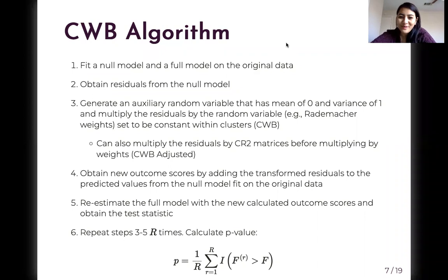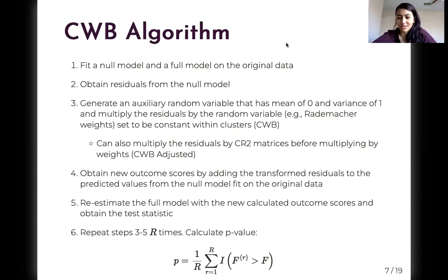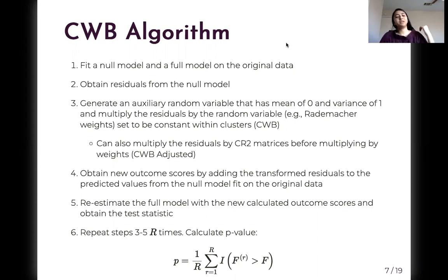This is the algorithm for cluster-wild bootstrapping. First, we fit a null model and a full model on the original data. The full model contains all variables of interest, and the null model excludes the variables being tested. We obtain residuals from the null model, generate an auxiliary random variable, and multiply the residuals by that variable — held constant within clusters. We can also multiply residuals by CR2 matrices before applying weights. We then obtain new outcome scores by adding transformed residuals to the predicted values from the null model, re-estimate the full model, and obtain the test statistic. We repeat this R times and calculate the p-value as the proportion of bootstrap test statistics greater than the original test statistic.